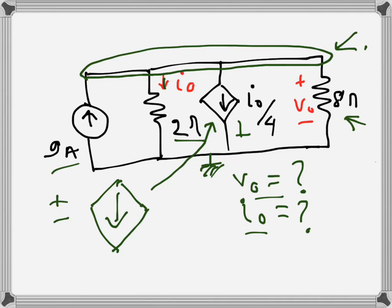It is a current-dependent current source because its value is dependent on a current — the current of this branch. If it were dependent on a voltage, then it would be a voltage-dependent current source. So it has the character of a current source and it is dependent on a current — that's why it's called a current-dependent current source.